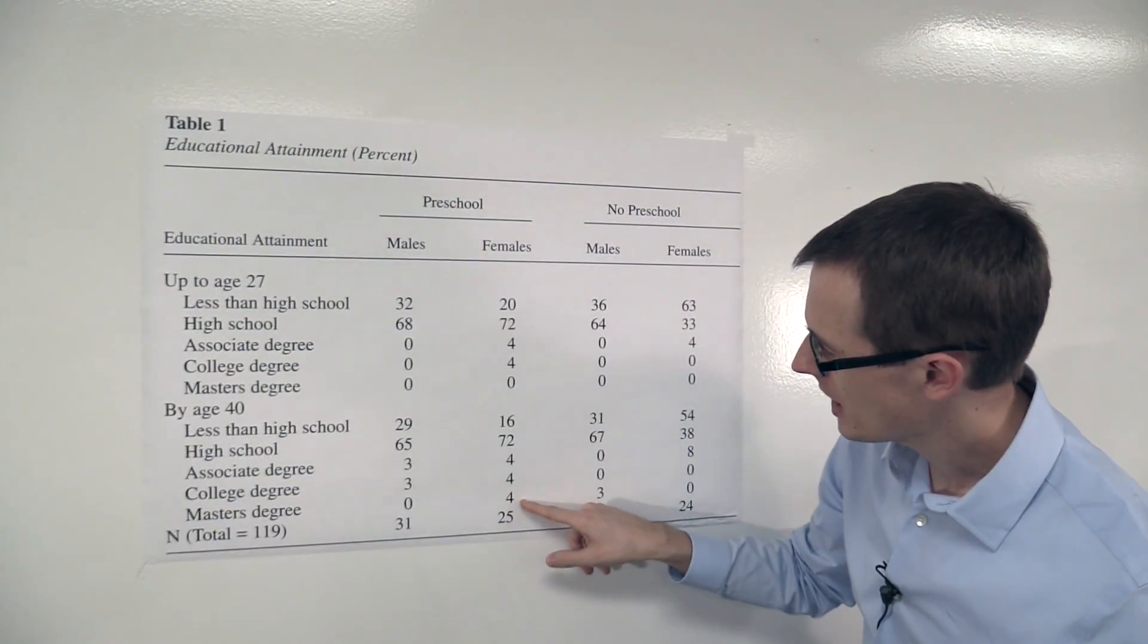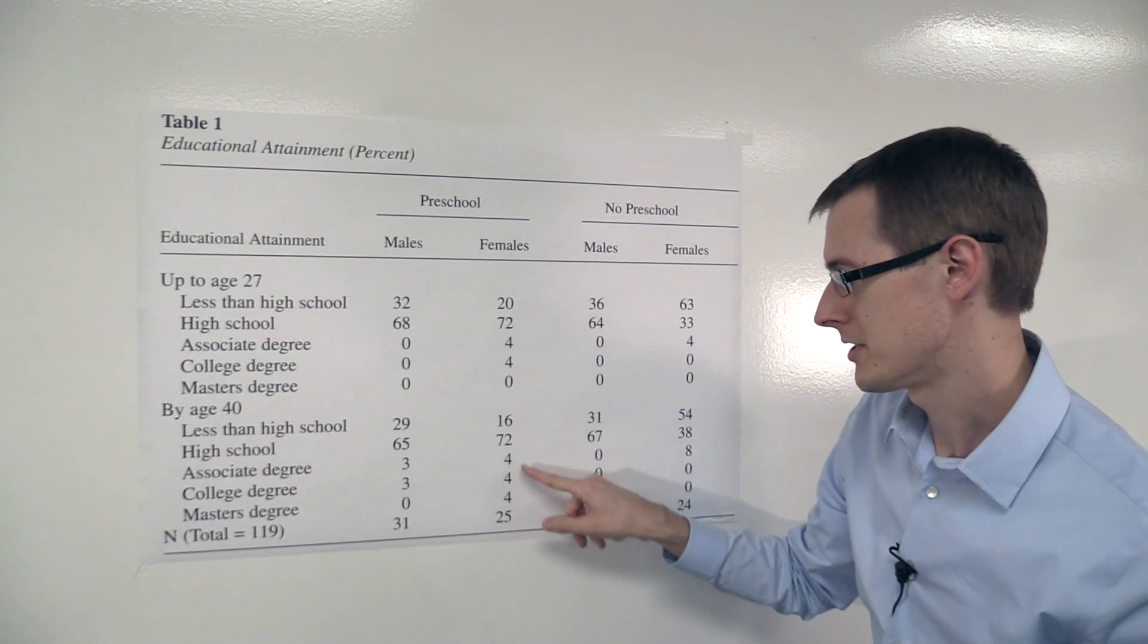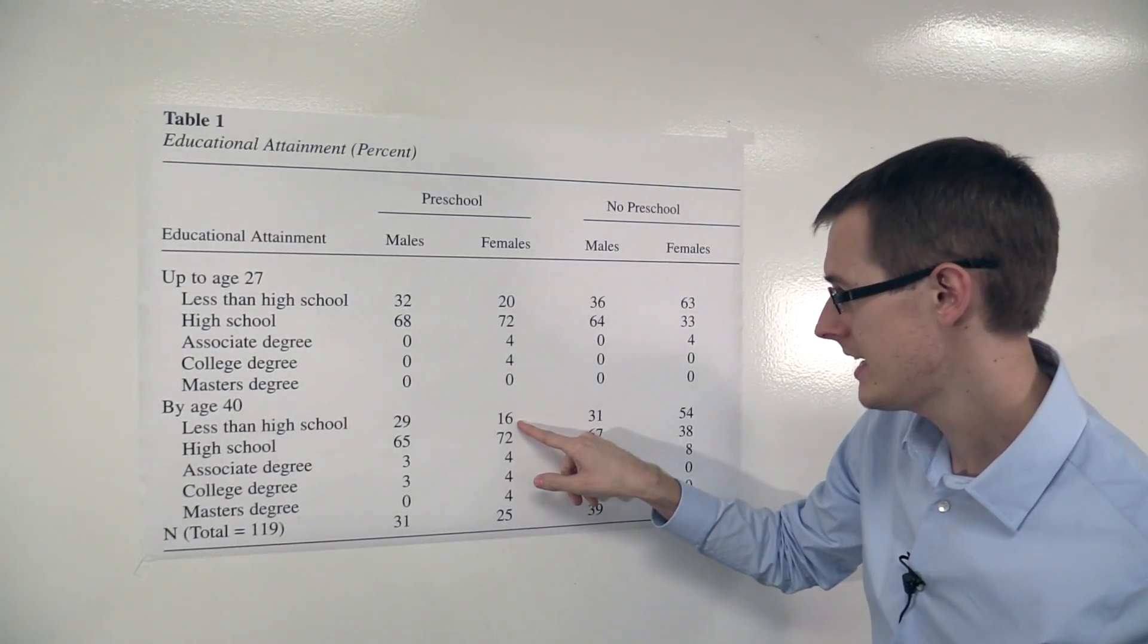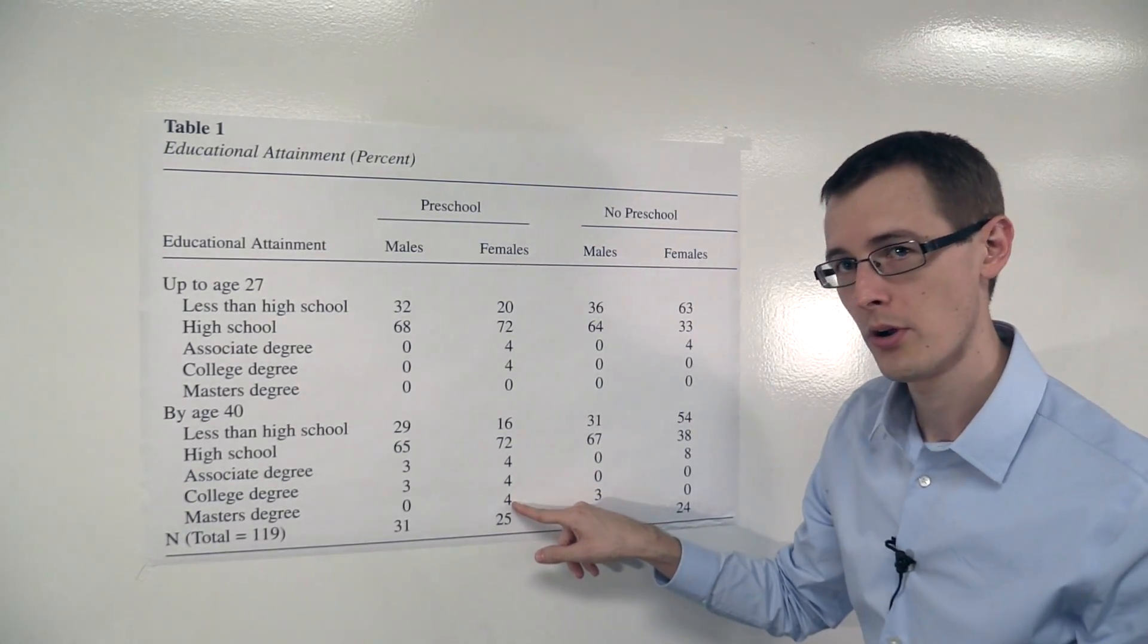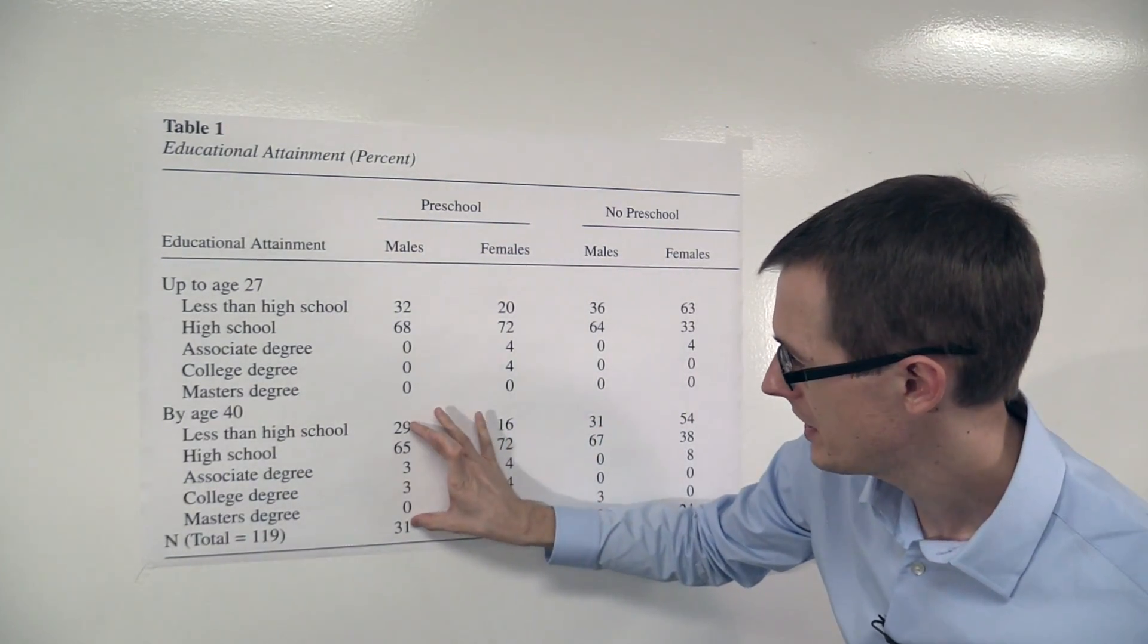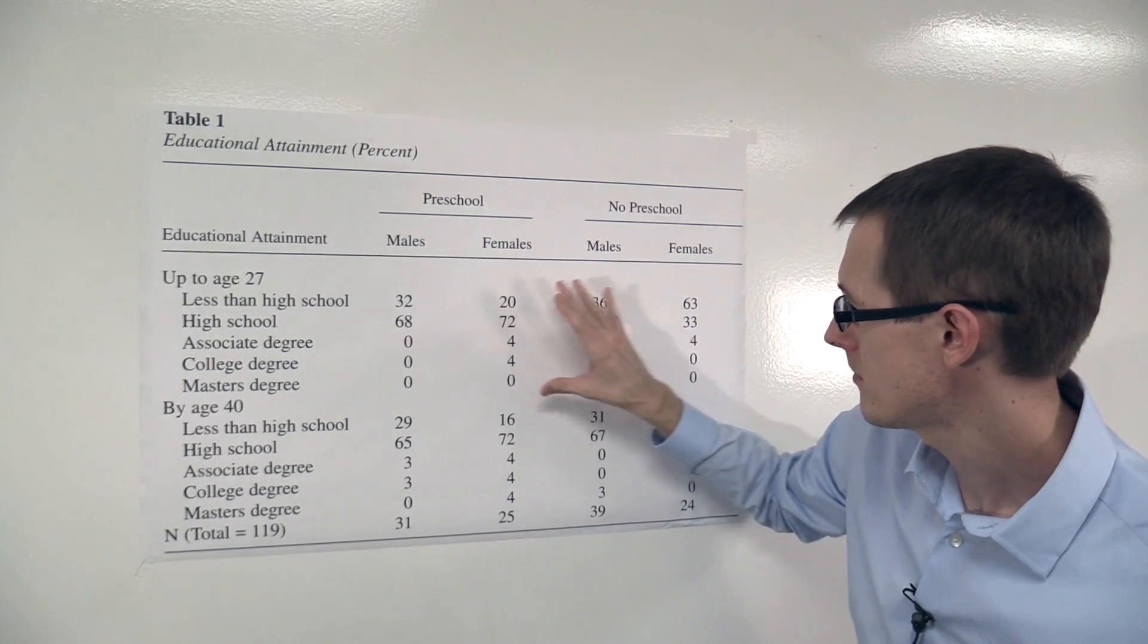And if you add these numbers up, you'll see it adds to 100 because they're percentages. 72 plus 16 is 88, plus 4 is 92, plus 4 is 96, plus 4 is 100. So each one of these is going to add up to 100 because they're percentages.